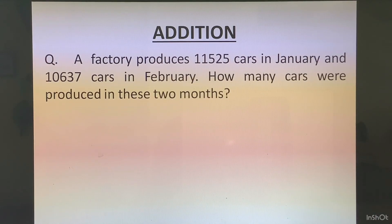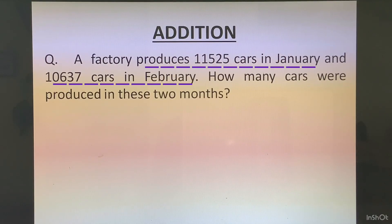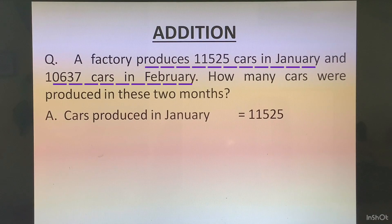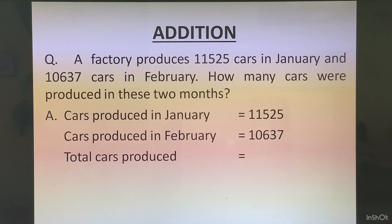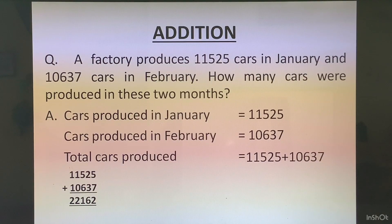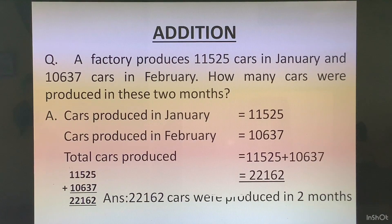To solve this question you will write statements. The information given is about cars produced in January and cars produced in February. So write: cars produced in January = 11525; cars produced in February = 10637; total cars produced = 11525 plus 10637. After this you do the calculation, find the answer, write it here, and then report the answer: 22162 cars were produced in 2 months.